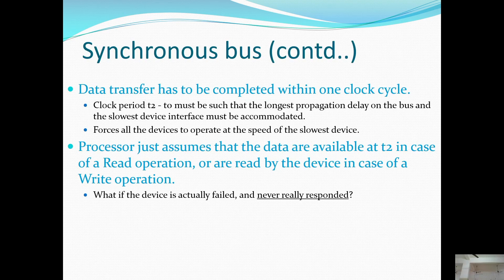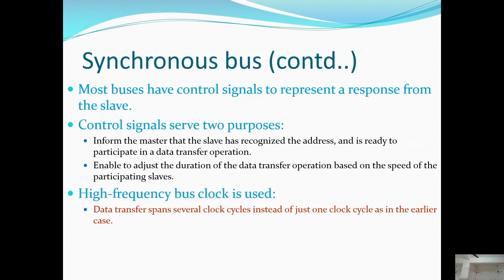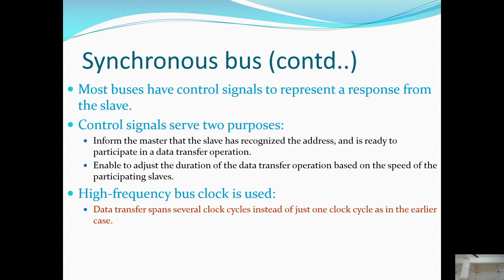The synchronous bus forces all devices to operate at the speed of the slowest device. The processor assumes data are available at T2 for a read operation, or ready by the device for a write operation. Most buses have control signals to represent a response from the slave, serving two purposes: informing the master that the slave has recognized the address and is ready for data transfer, and enabling adjustment of the transfer duration based on device speed. A high-frequency bus clock is used, and data transfer spans several clock cycles instead of just one.